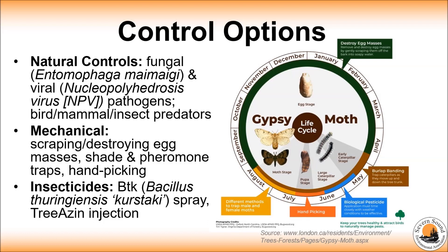Once the caterpillars are two or three centimeters in length by mid-June, they move down the tree to seek shelter from predators and heat during the day and feed on the trees at night. This is a good opportunity for the burlap band to trap them — you can check the trap daily and dump them into soapy water.